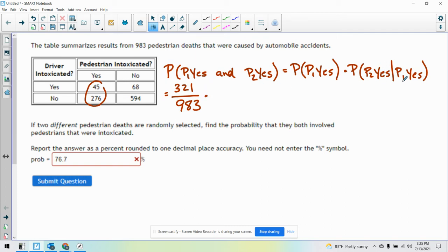Now we assume that happened. We assume we got what we wanted. So now if I want to find the probability of the second person being a pedestrian intoxicated, one of these is going to go away. So there's only 320 left, and I've already selected a person, so there's 982 people left. So if you multiply those together,